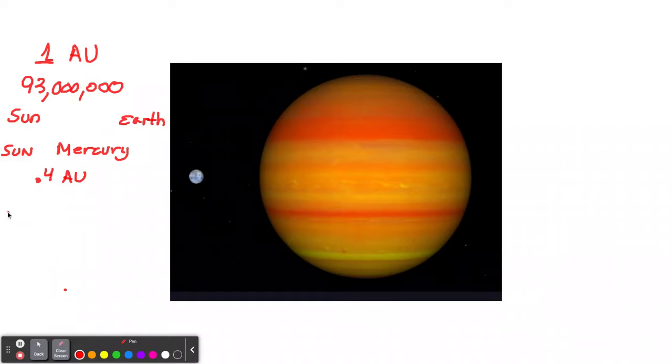But from the star WASP-127 to the planet WASP-127b, it's 0.048 AU - extremely close. The reason they call them WASP, by the way, is it stands for wide-angle search.